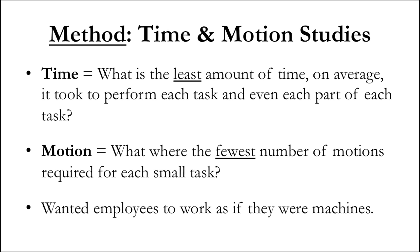His method was called time and motion studies. That meant he wanted to figure out the least amount of time on average it took to perform each task and even each part of each task. He really broke it down.